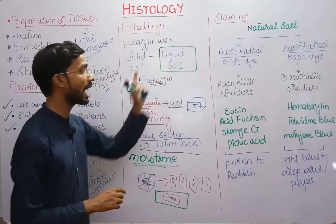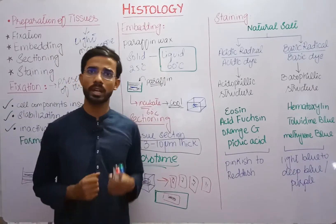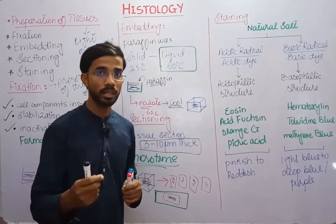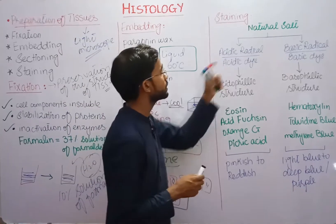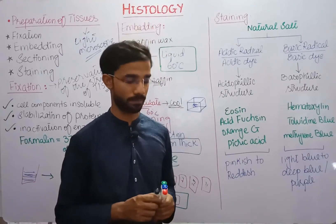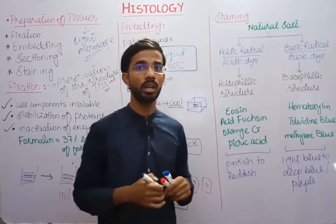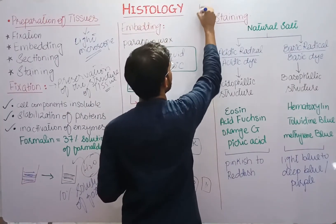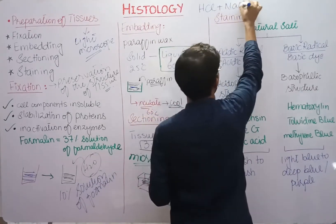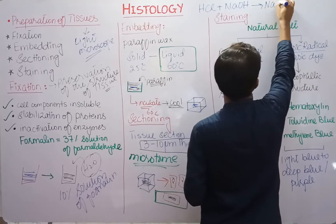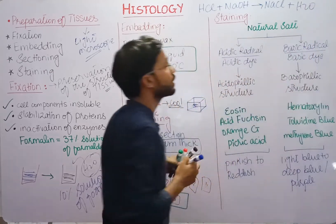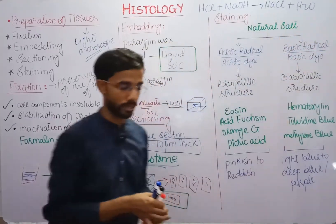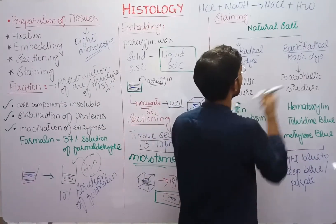The last stage is staining. We have to stain the sections because we can't see tissues — the majority of tissues are colorless. We stain for the distinction of different components of the cell. To understand the concept of staining, first understand how salts are formed. For example: HCl + NaOH → NaCl + H₂O. Here HCl is an acid, NaOH is a base, and NaCl (sodium chloride) is the salt formed.